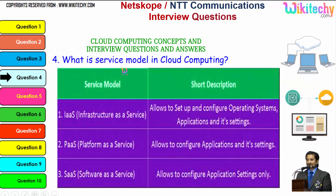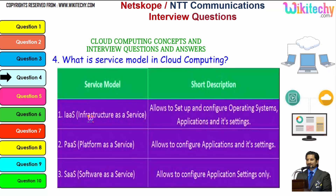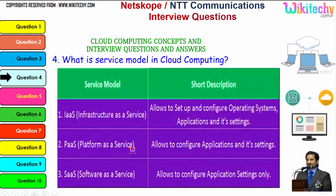Now the question is: what is the service model in cloud computing? The three major service models are: Infrastructure as a Service — allowed to set up and configure the operating system, application, and its settings, so you are given a server and you can install whatever operating system you want. Platform as a Service — you are allocated a specified operating system and can put any applications. Software as a Service — you can do whatever application settings you want.